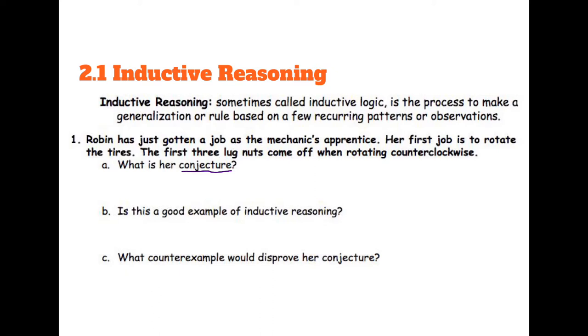If the first lug nut came off when rotating counterclockwise and then the second one did the same thing and the third one did the same thing, then she can make kind of a broad statement based on her research that all lug nuts come off when rotating counterclockwise. Remember conjecture is kind of a rule based on a couple observations or a broad statement.